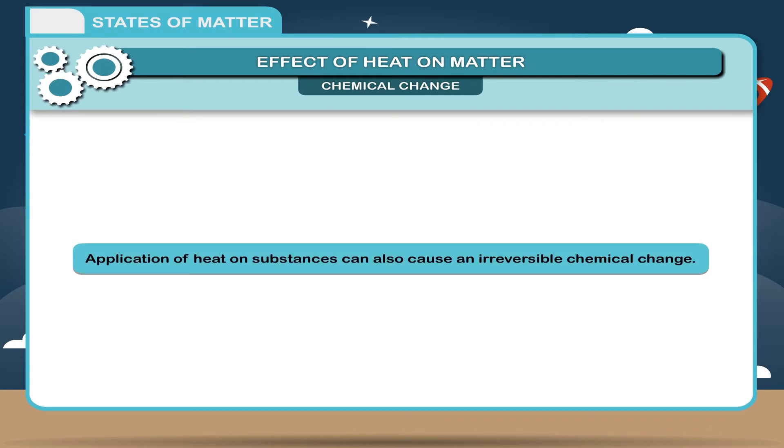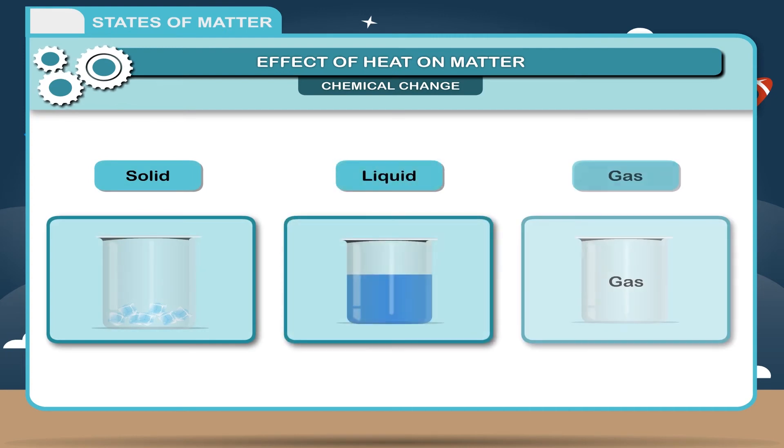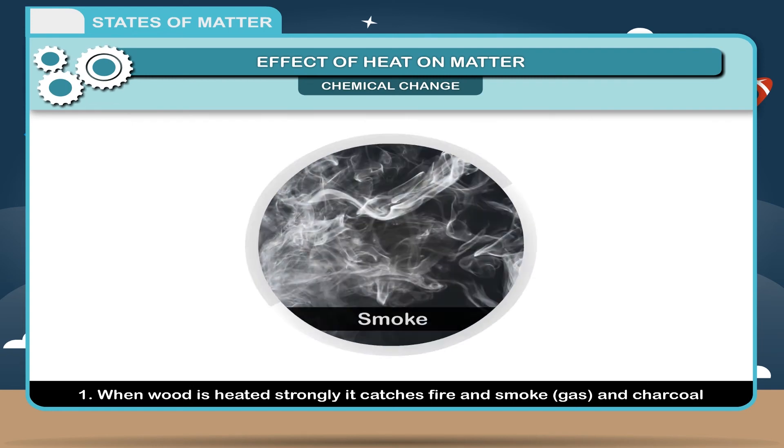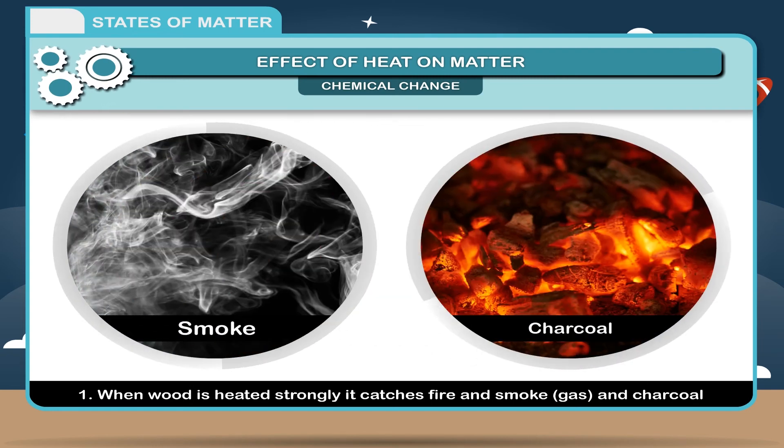Application of heat on substances can also cause an irreversible chemical change. Burning of all substances, whether solid, liquid, or gas, brings about a chemical change which is irreversible. Some examples are: 1. When wood is heated strongly, it catches fire and smoke (gas) and charcoal (solid) are produced.